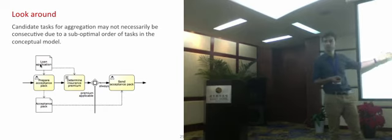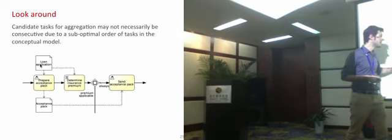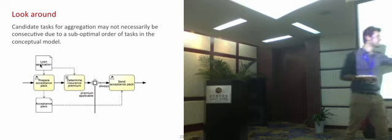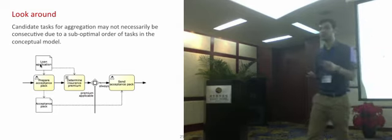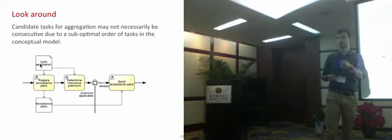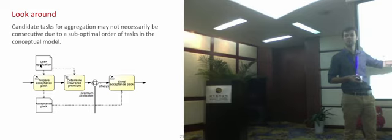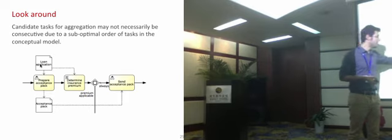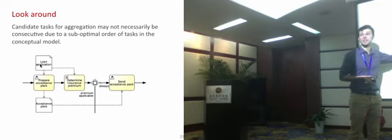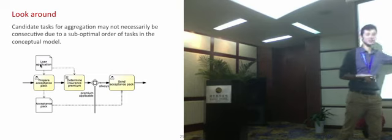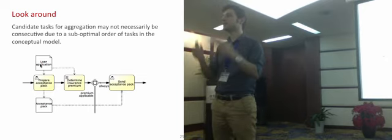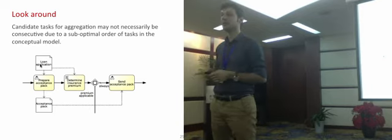We may also receive a conceptual process model with a sub-optimal order of activities, in which case we need to re-sequence. For example, 'prepare acceptance pack' could be done by a loan officer, followed by 'send acceptance pack,' which is a user task where information is prepared and submitted. Then the loan officer confirms that the pack has been sent. 'Determine insurance premium' is in the middle because it's postponing a decision that could have been made earlier, so those two tasks could be aggregated.